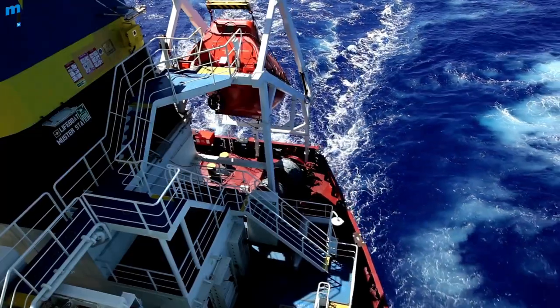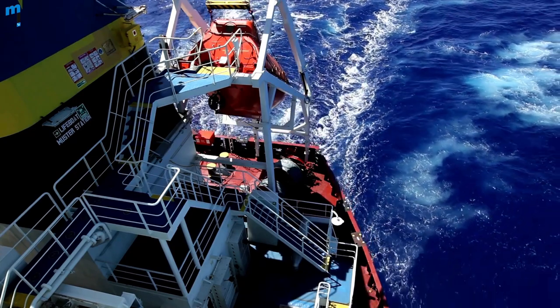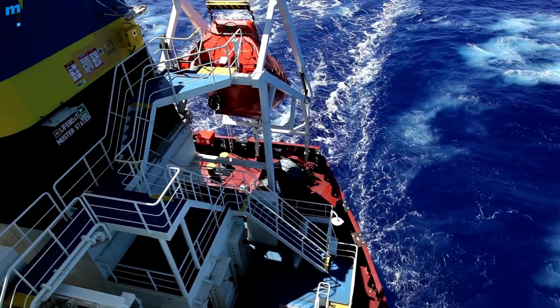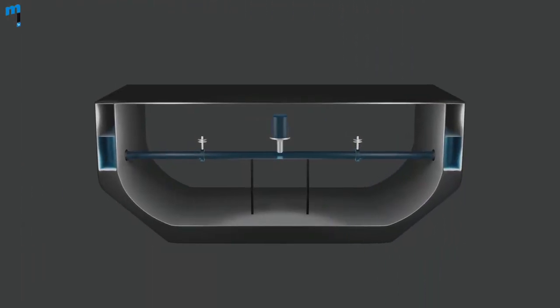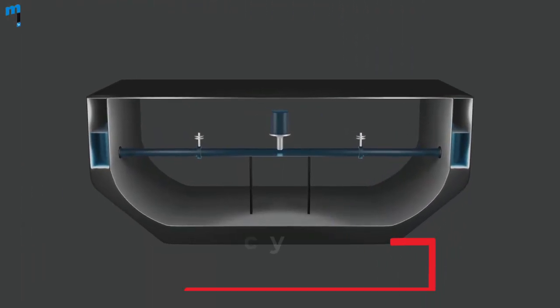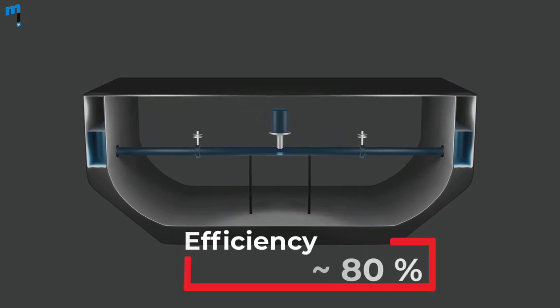Thus, the device can be used to control ship motion due to every single wave. Depending on the sophistication of the system, active tank stabilizers have been found to achieve an efficiency of 80% or more in motion stabilization.